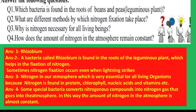Question answers: Which bacteria is found in roots of beans and peas? — Rhizobium. What are the different methods by which nitrogen fixation takes place? — First, bacteria called rhizobium found in the root nodules of leguminous plants help in fixation of nitrogen. Second, sometimes nitrogen fixation occurs when lightning strikes.